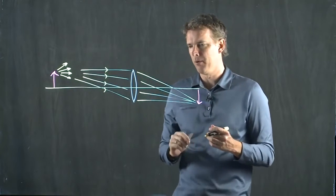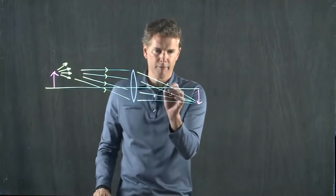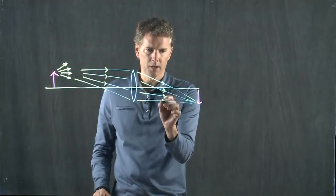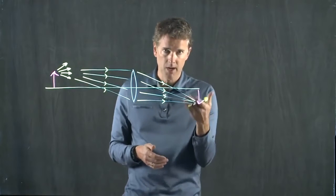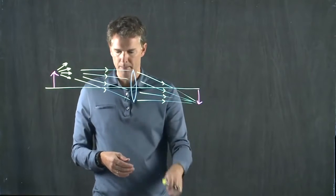But there's really an infinite number there. So if I have four rays that are going to form my image, that means that the CCD array or the piece of film is going to pick up that much light.